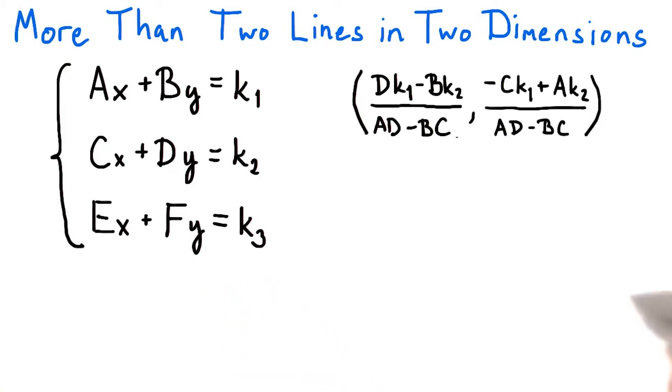Now, in general, unless a, b and c, d happen to be parallel vectors, the first two lines will have a single intersection point.